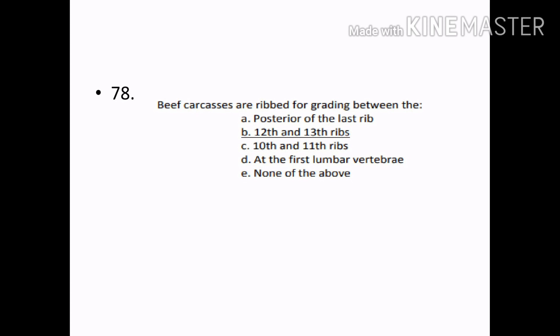Beef carcasses are ribbed for grading between: Options — Posterior of the last rib, 12th and 13th ribs, 10th and 11th ribs, at the first lumbar vertebrae, none of the above. Correct answer: Option B — 12th and 13th ribs.